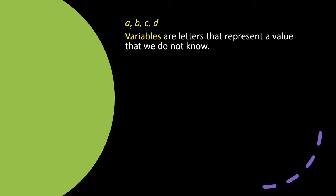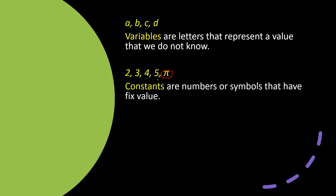Also in algebra we have numbers — like 2, 3, 4, 5 — and we also have the symbol pi, which equals 3.14. These numbers and symbols in algebra we call constants. We call them constants because they have a fixed value — a value that is constantly the same. For example, 2 is always 2, pi is always 3.14 — the value never changes. So far in algebra we know that we have variables and constants.